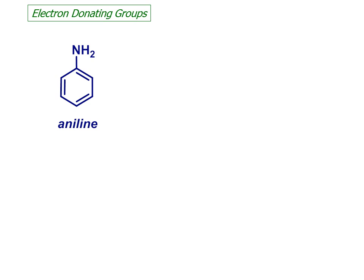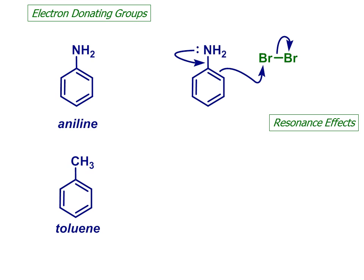Other groups do this too, notably the NH2 group of aniline, and alkyl groups like the CH3 of toluene. Aniline could donate electrons by resonance, like the OH in phenol.